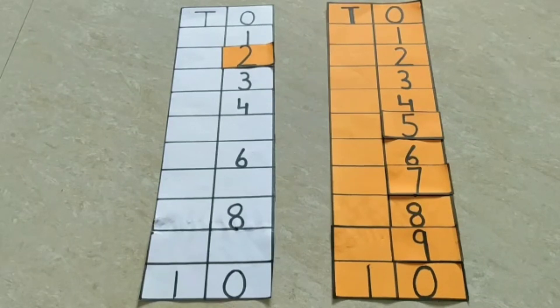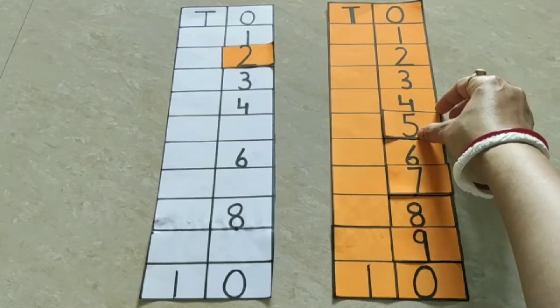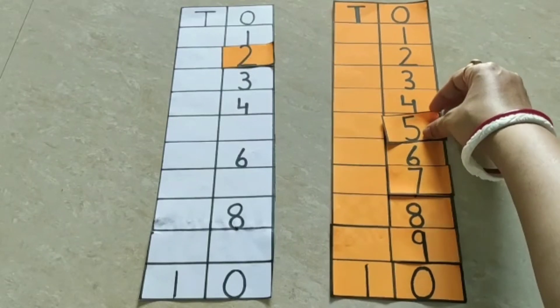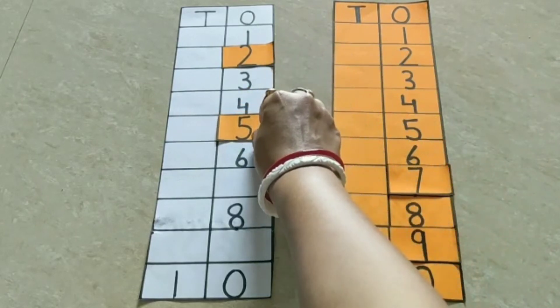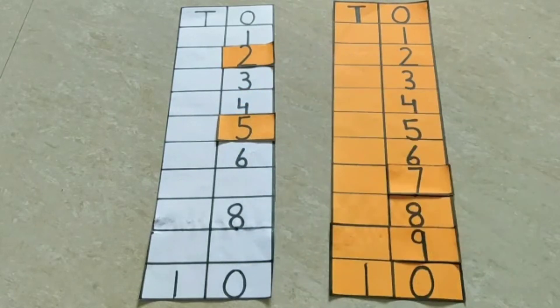Now which number? Oh, again one number is missing. Okay. Now let's find out. So we pick this card and keep it here. Which number is this? This is number 5. 1, 2, 3, 4, 5, 6.